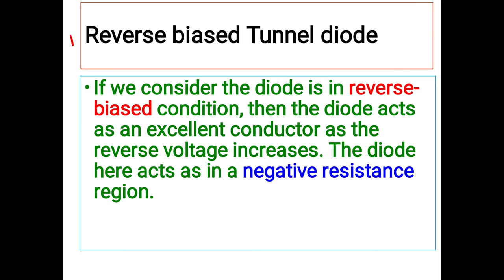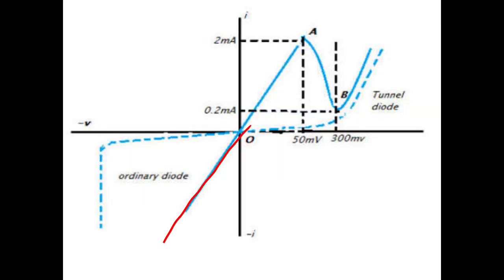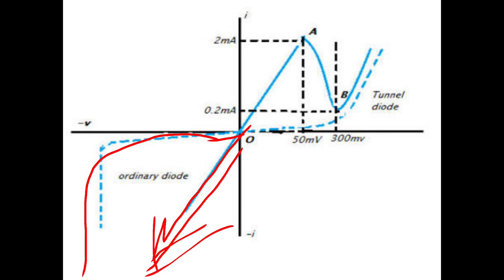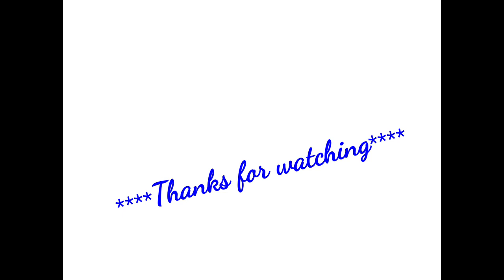Now we will see the working of the tunnel diode in the reverse biased condition. If we consider the diode in reverse bias, the diode acts as an excellent conductor as the reverse voltage increases, behaving as in the negative resistance region. You can see this from the figure — this is the reverse characteristic of the tunnel diode. Compared to the characteristic of a normal PN junction diode, the reverse current of the tunnel diode sharply increases as the reverse voltage increases. Thanks for watching, and if you like this video please subscribe to my channel.